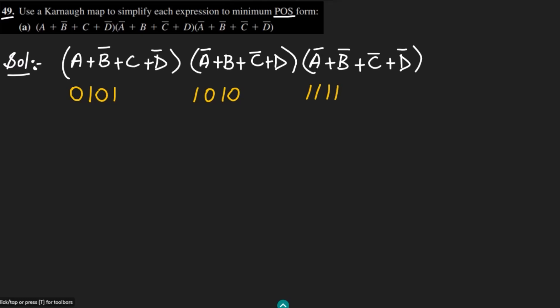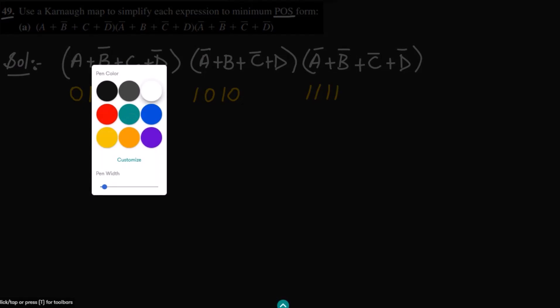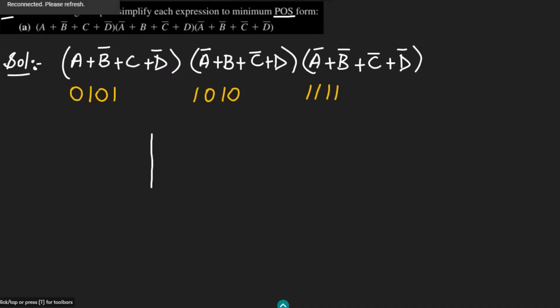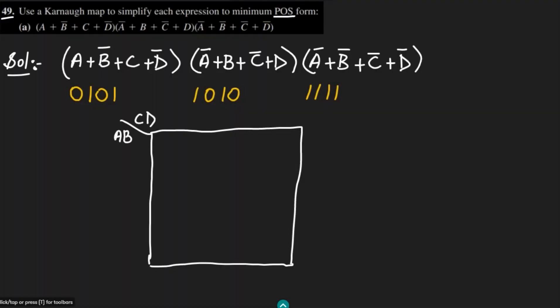These are the binary values and after it we have to draw the Karnaugh map. The Karnaugh map here will be 00, 01, 11, 10 along the edges. Let me draw all the cells.